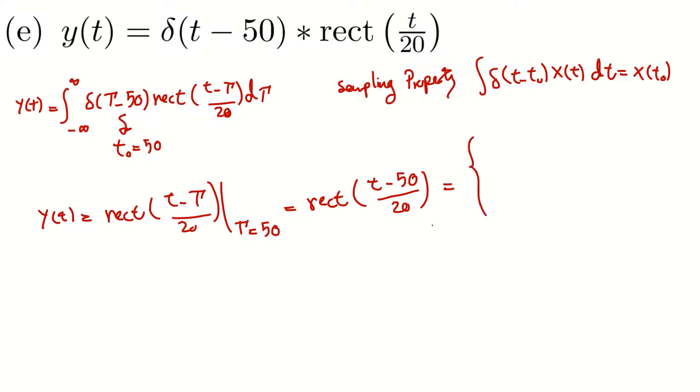And the value of this signal is 1 if, you know, if |t - 50| is smaller than or equal to 20 divided by 2. And it is 0 if the absolute of this t - 50 is larger than 20 over 2. So if I further simplify this, I can say rectangular of (t - 50)/20.